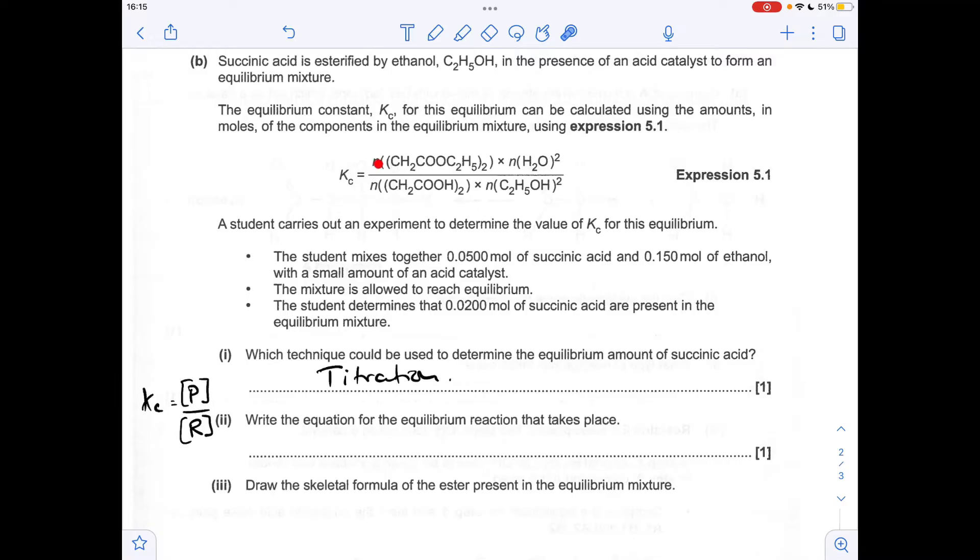So these two chemicals here are the products of the reaction. These two chemicals here are the reactants. And just remember that if we've got any powers, they are the stoichiometric numbers in the balanced equation. So the equilibrium reaction looks like that.